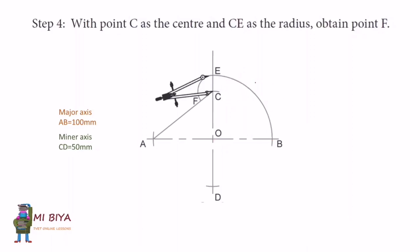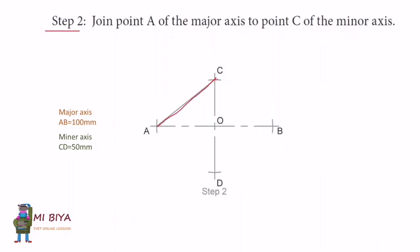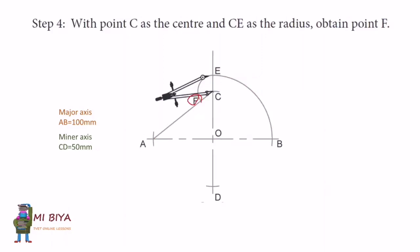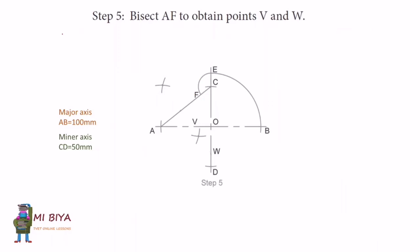In Step 4, to obtain point F, you already have point C. Position your compass at C, stretch it to point E, then draw an arc to obtain point F. This point is very, very important. Step 4 is now done.